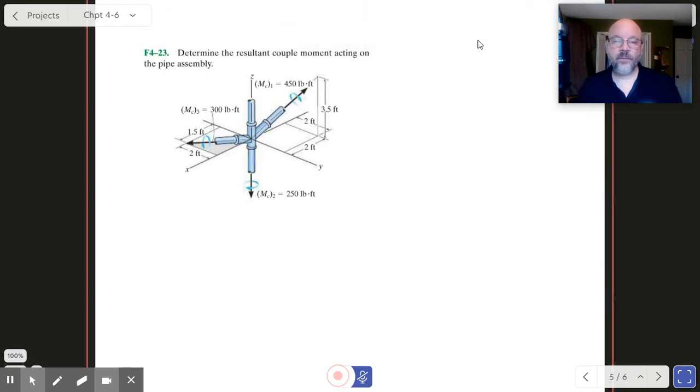All right. In number 23, we begin to see how couple moments can be really handy for us if we've got multiple couple moments that are acting. In this one, it says the resultant couple moment. And so again, that means we're going to add them up and see what the net is, see what the total is.